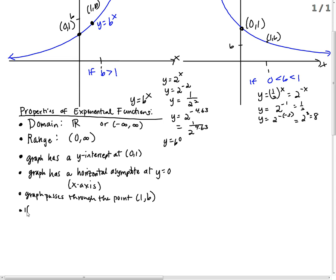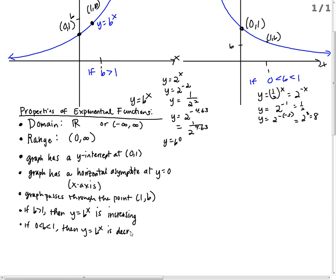If b is larger than 1, then y equal b to the x is increasing. What happens if b is a fraction or a decimal? The graph is decreasing. So those are all the properties of the exponential functions depending on the cases of b.